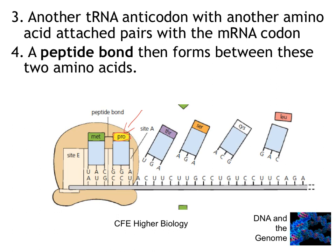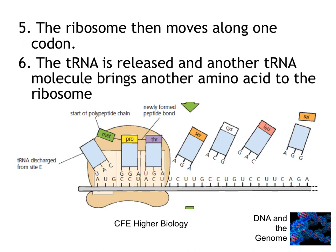A peptide bond forms between these two amino acids. The ribosome then moves the messenger RNA molecule along by one codon, and this tRNA molecule is discharged. But the amino acid that was carried is still attached by a peptide bond to the next amino acid. Then another tRNA molecule brings along another amino acid to the ribosome, and another peptide bond is formed between these amino acids.